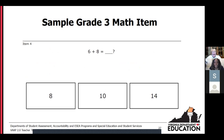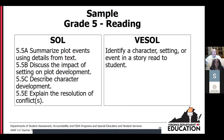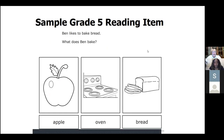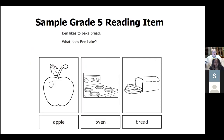For the grade three math item, the stem is '6 plus 8' and the answer options are three choices: 8, 10, or 14. For the grade five reading example, SOL 5.5 with sections A, B, C, and E became essentialized into the V-SOL of 'identify a character, setting, or an event in a story read to a student.' The item has pictorial support — 'Ben likes to bake bread' — with three pictures for pictorial support and word choices underneath: apple, oven, or bread.